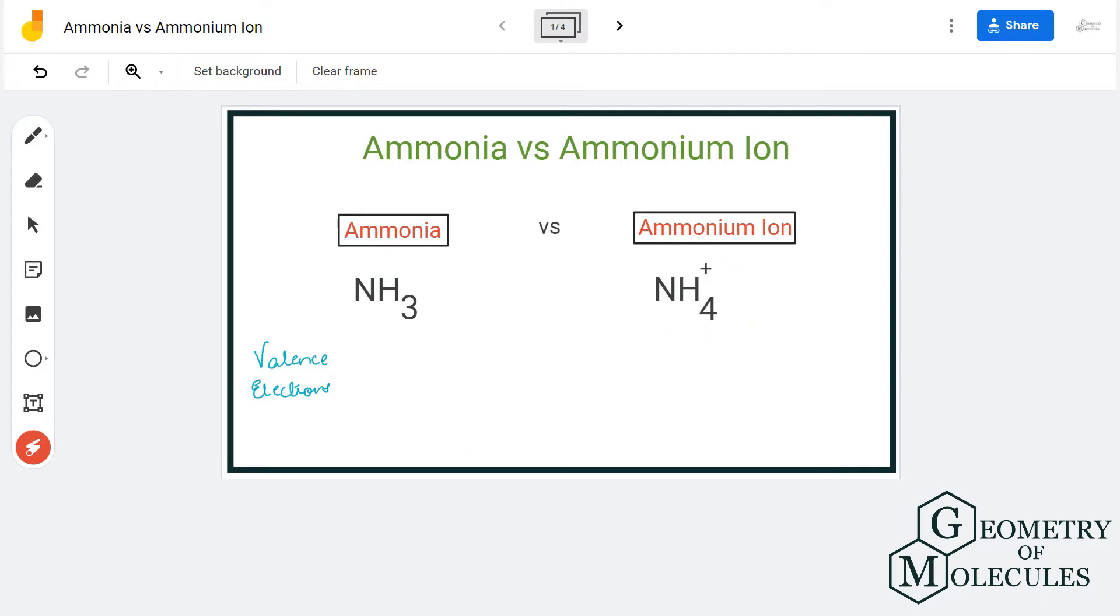NH4+. The plus sign is because of the positive charge it has after giving away one electron, and that's why it's an ion. But ammonia is a complete compound because the charges are neutral.